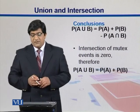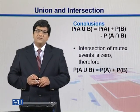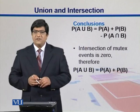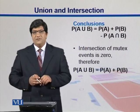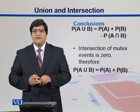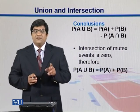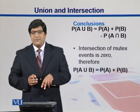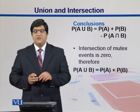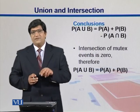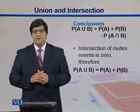In the case of mutually exclusive events, the intersection is 0, so we can simply add up their probabilities to get the union. But in the case of overlapping or non-mutually exclusive events, you need to subtract the intersection from the sum of their individual probabilities.